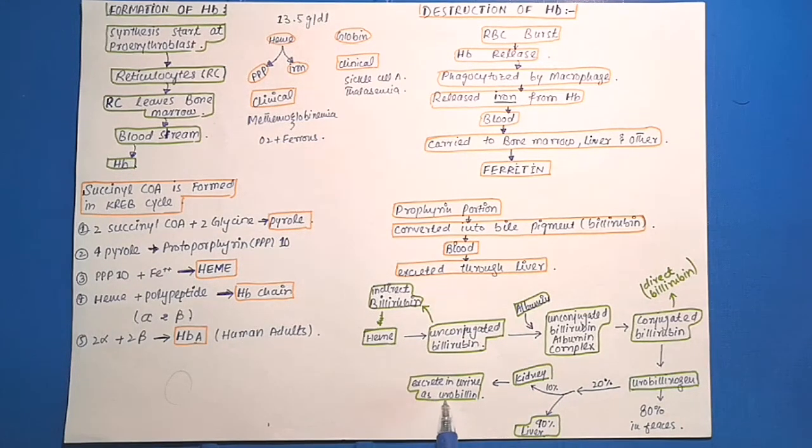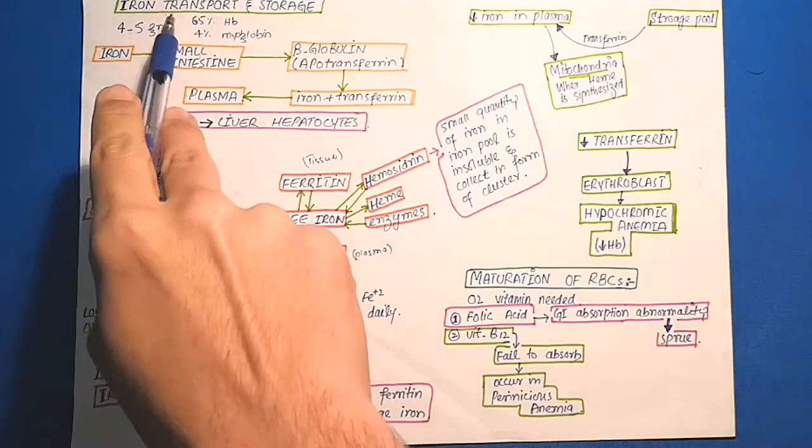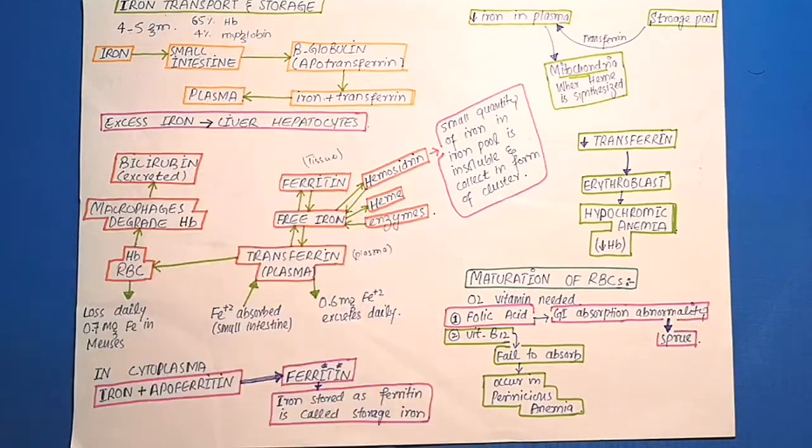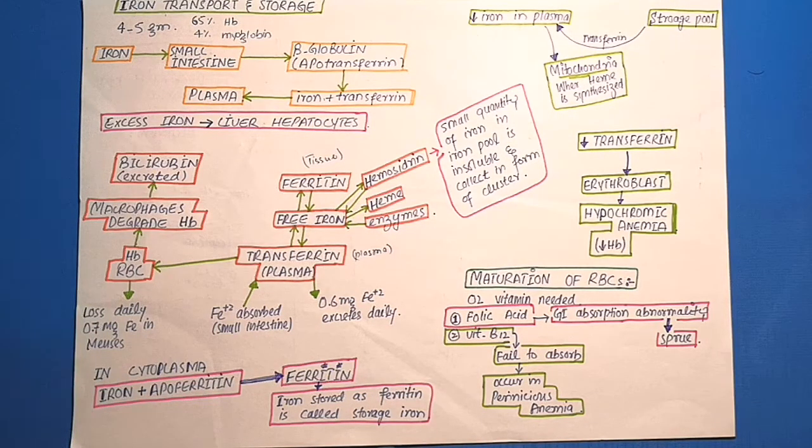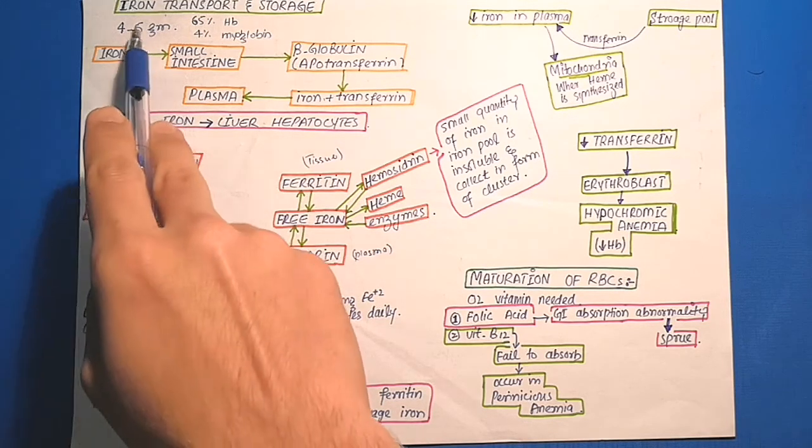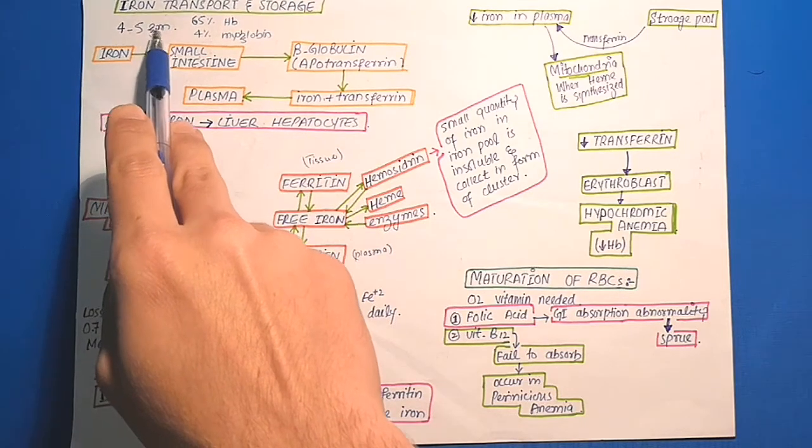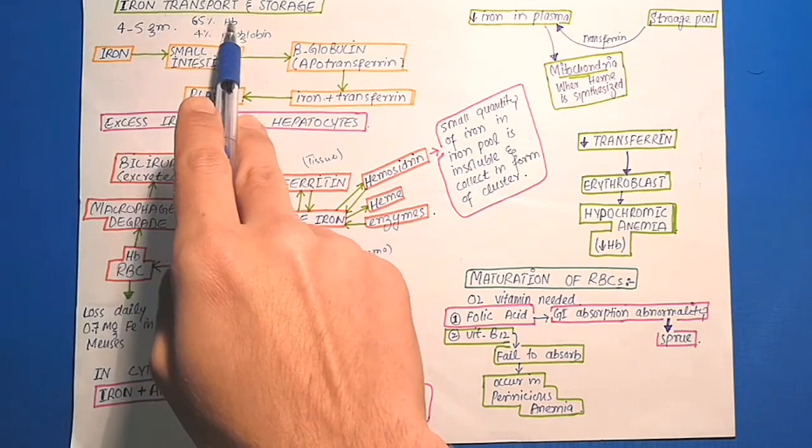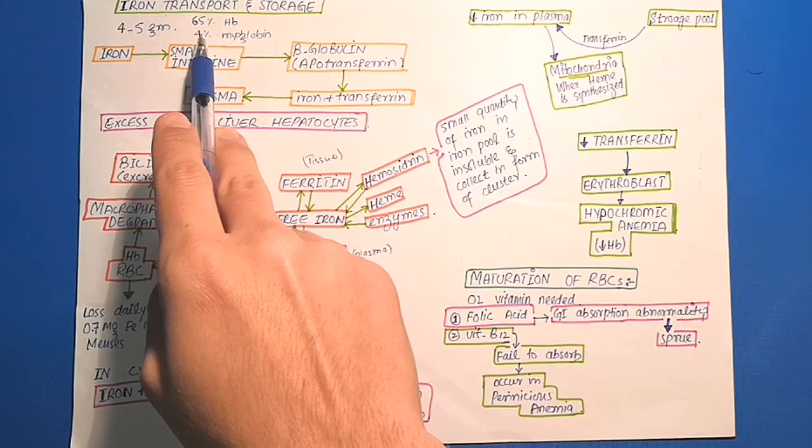Iron transport and storage. Iron is important for formation not only of hemoglobin but also myoglobin, cytochrome, and cytochrome oxidase. The total quantity of iron in the body is 4 to 5 grams, out of which 65% is in the form of hemoglobin and 4% in the form of myoglobin.